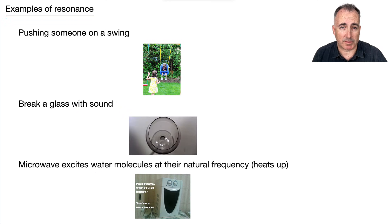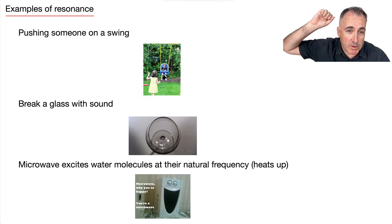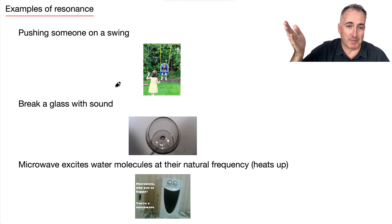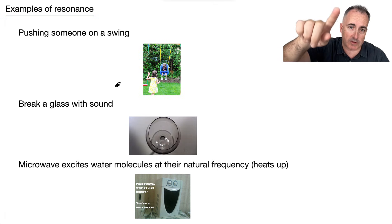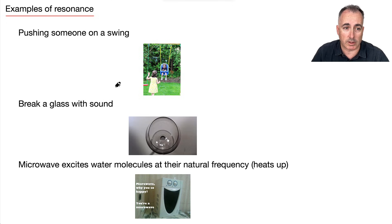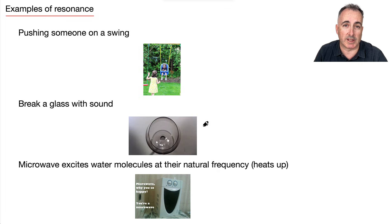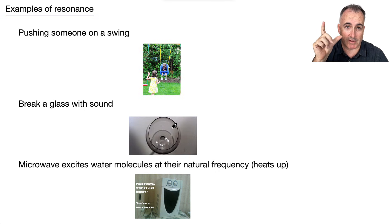There are plenty of examples of resonance. One example is pushing someone on a swing — if someone is swinging back and forth, depending on when you push that swing, if you time it wrong it doesn't help, but if you time it just right and hit it at that natural frequency, so you push the person on their way up and then wait and push them again, you can make the amplitude increase. Also, you can actually break a glass with sound. If you vibrate a glass with a really powerful speaker right beside it at the sound that makes it vibrate, this glass will start to vibrate, and if it vibrates too much and the amplitude is too large, it can actually break.